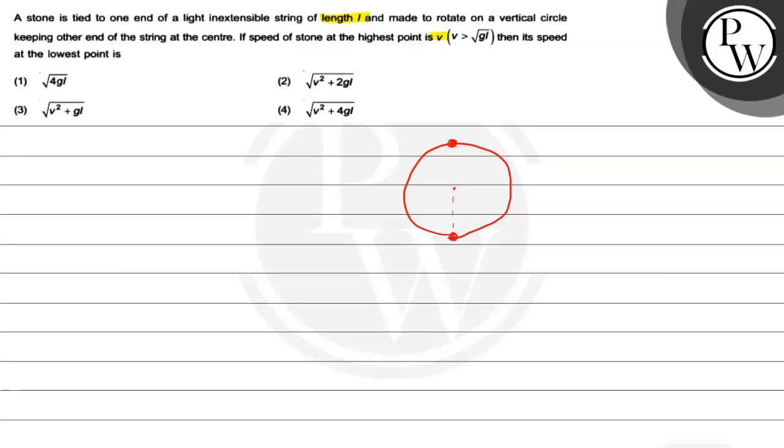At the highest point, the velocity is V. At the lowest point, it's V1 and we have to find it. This question uses a key concept.